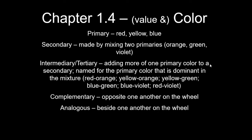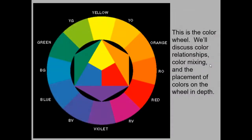Complements are colors that are opposite one another on the color wheel, so the opposite of a primary is always a secondary: red and green, yellow and violet, blue and orange. Analogous colors are colors that are side by side on the color wheel.